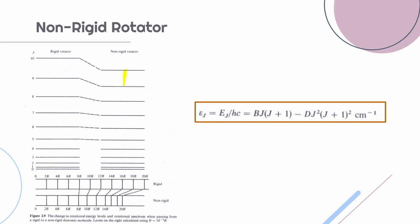The energy term is given by EJ equals B times J into J plus 1 minus D times J squared into J plus 1 whole squared, where D is the centrifugal distortion constant.